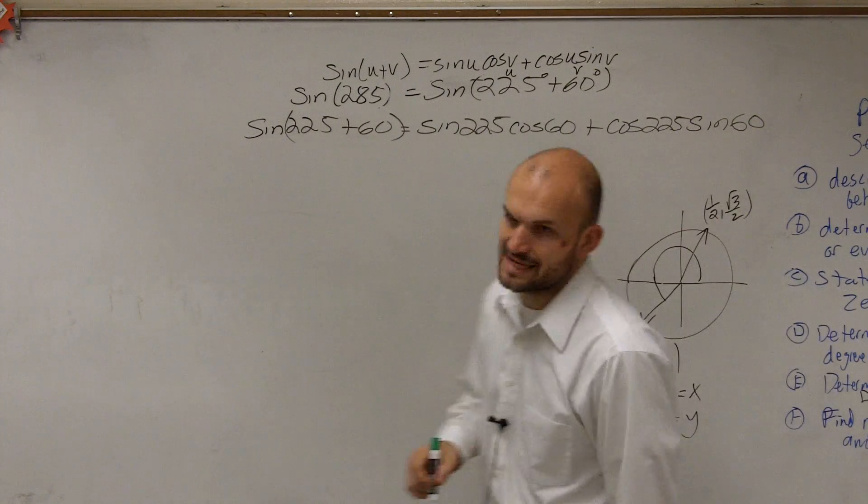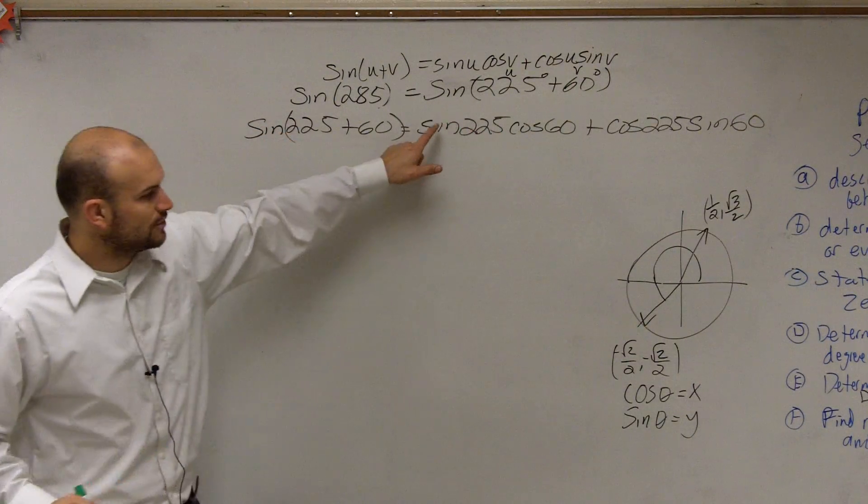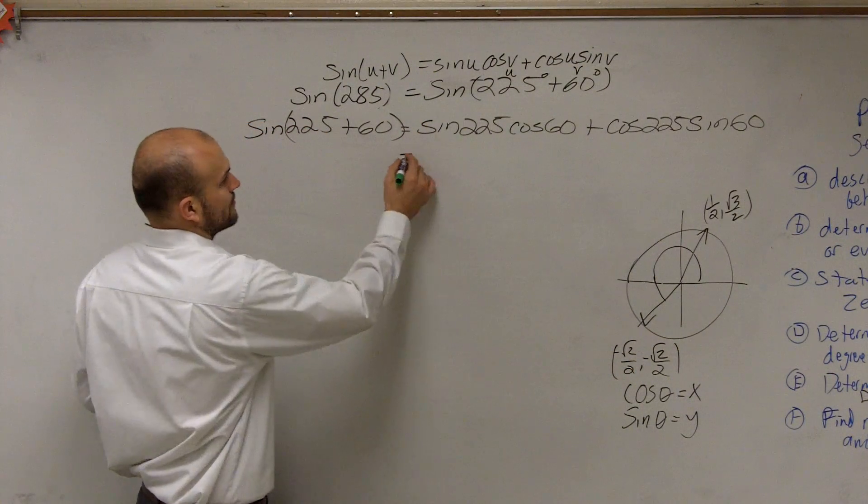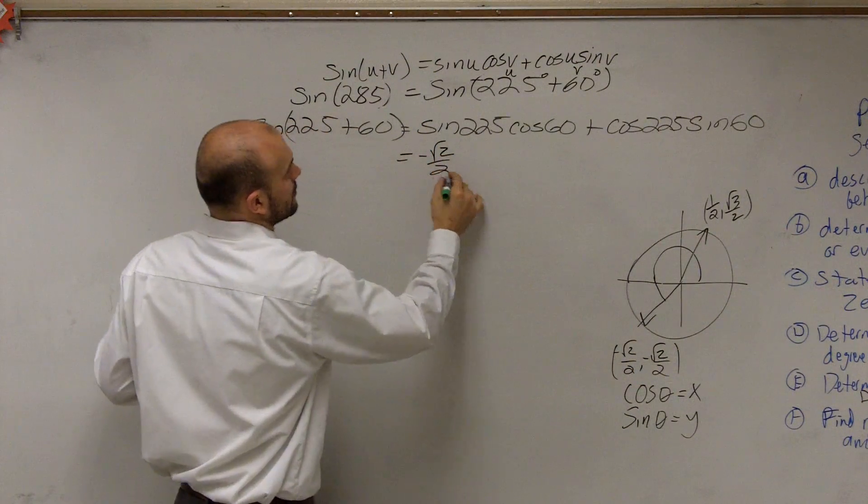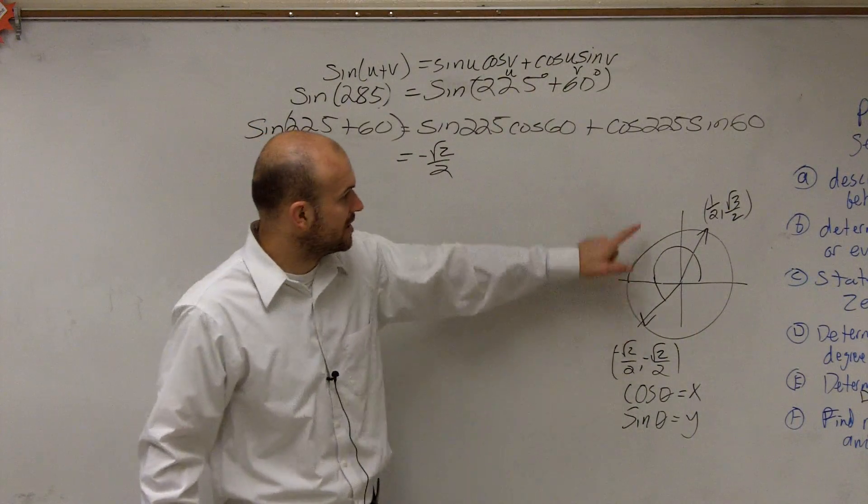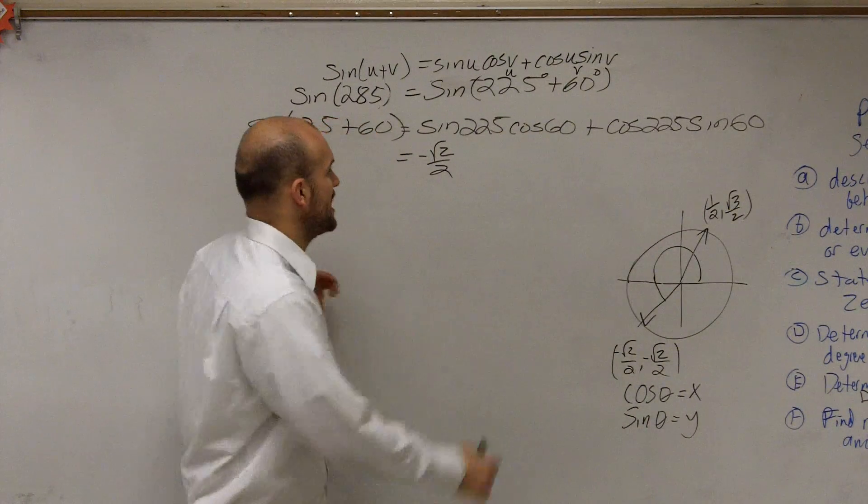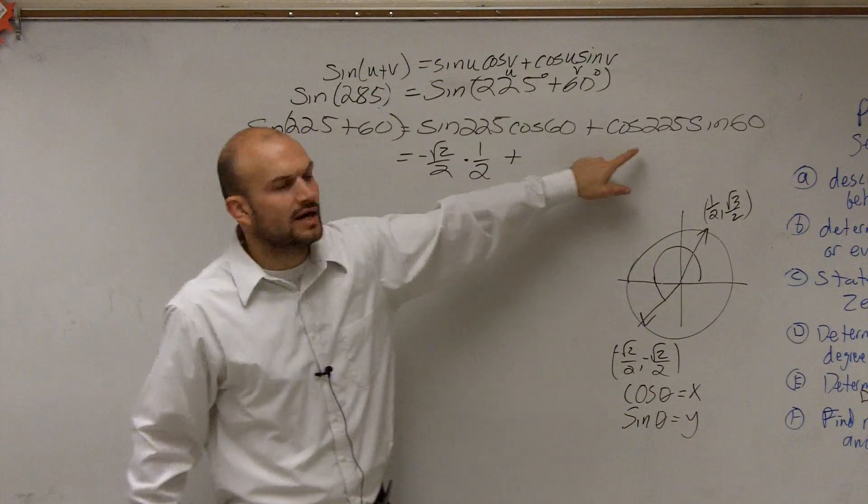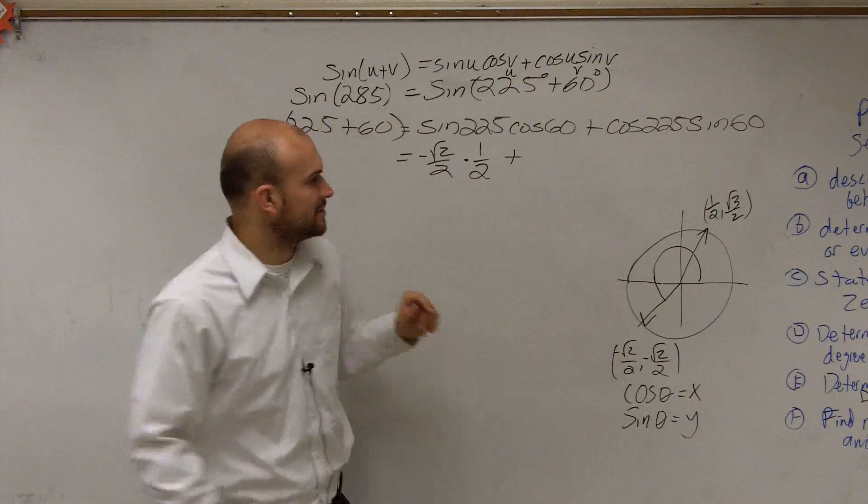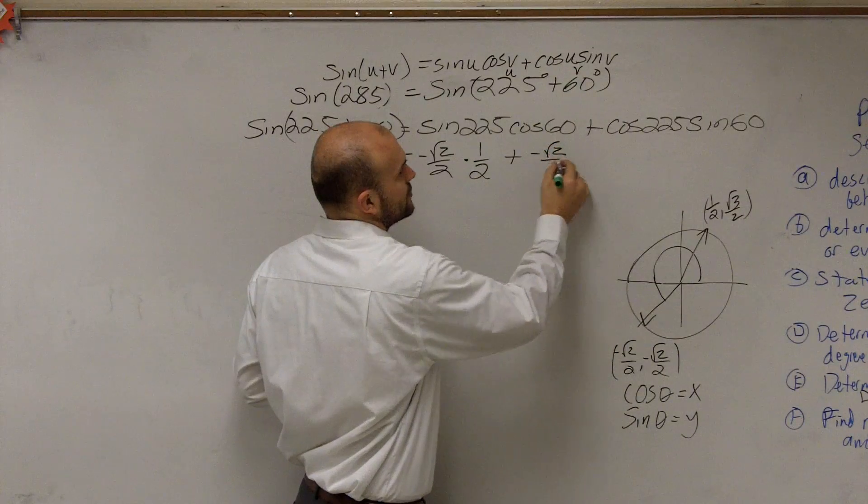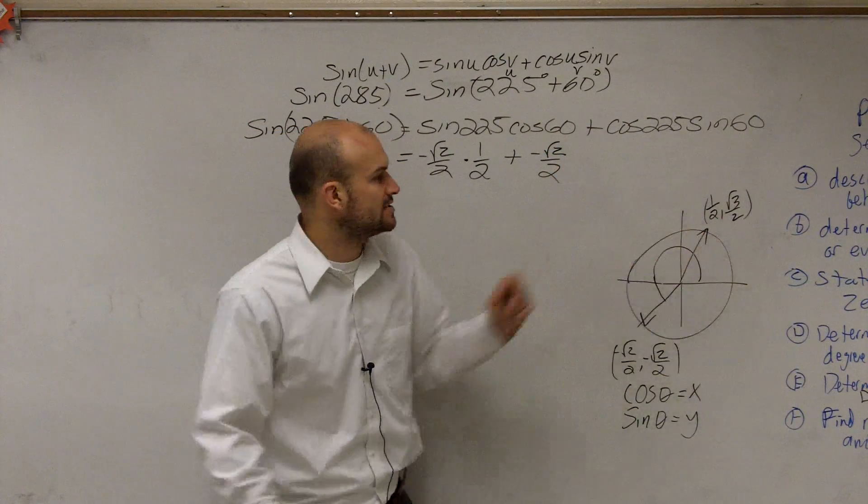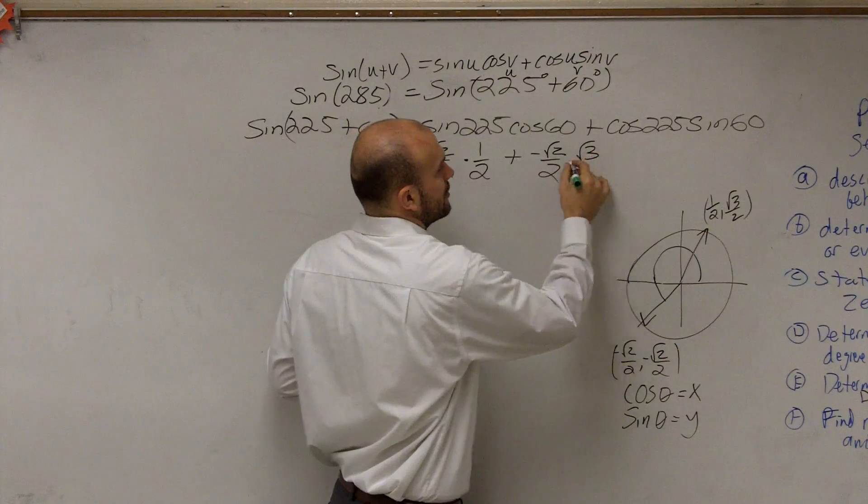So now, if I know that sin(225) equals the y-coordinate, the y-coordinate here is -√2/2. The cosine of 60 degrees is my x-coordinate of 60 degrees, which is 1/2. Plus the x-coordinate of 225 degrees is -√2/2, and the y-coordinate of my 60 degrees is √3/2.